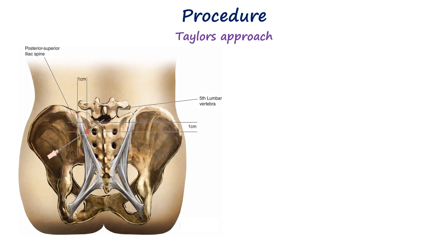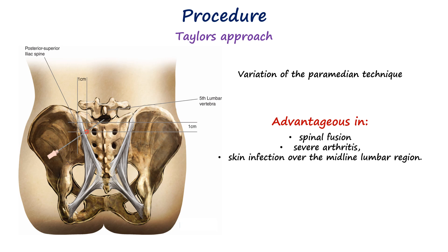The Taylor approach, a variation of the paramedian technique, involves inserting a long spinal needle 1 cm medial and 1 cm cephalad to the posterior superior iliac spine. The needle is then directed medially, cephalad, and anteriorly at an angle of about 50 degrees toward the L5-S1 interspace, which is usually the widest interlaminar space. This approach is particularly useful in patients with spinal fusion, severe arthritis, or skin infection over the midline lumbar region.